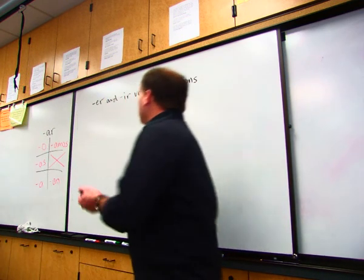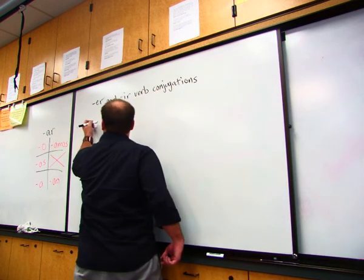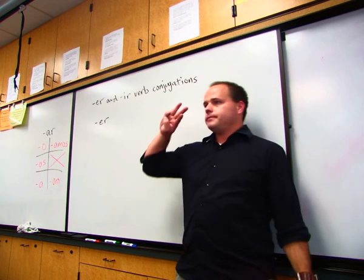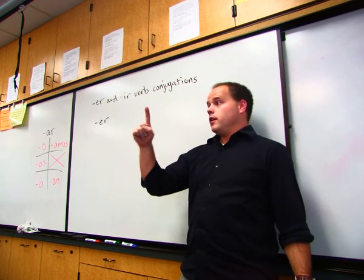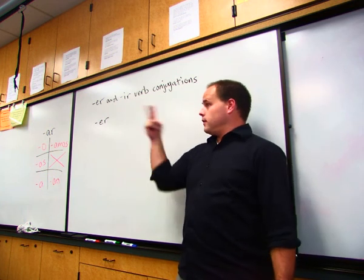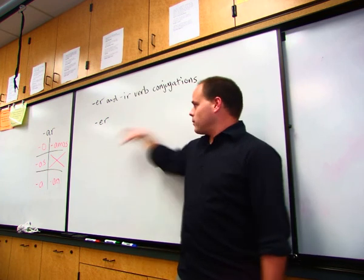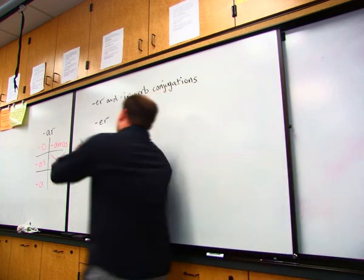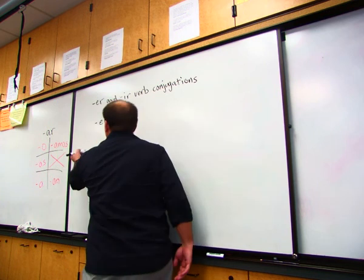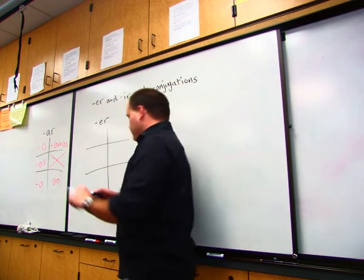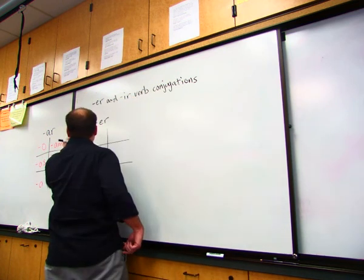Now we are going to go over our ER and IR verb conjugations. Because how many endings are there for verbs? Three. AR, ER, and IR, right, so we're going to have it all right here. So when we have a verb, there's an ER verb, and we want to conjugate it.